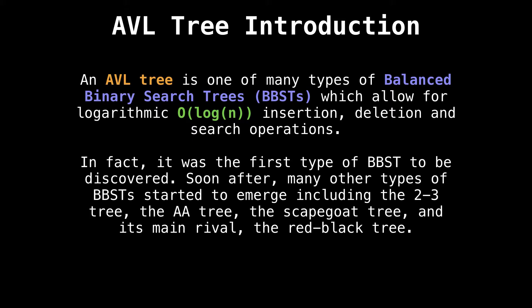Then soon after, a whole bunch of other types of balanced binary search trees started to emerge, including the two-three tree, the AA tree, the scapegoat tree, and the AVL tree's main rival, the red-black tree.